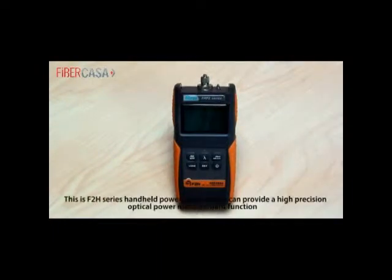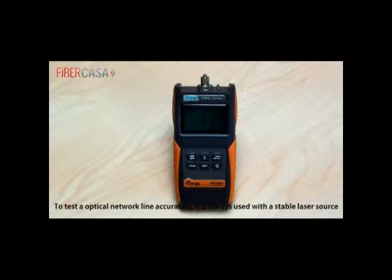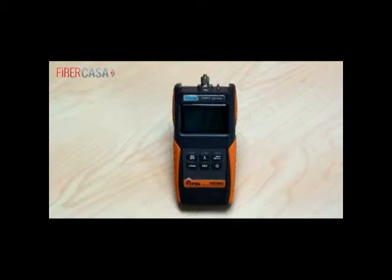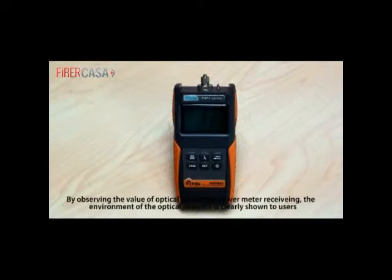This is F2H series handheld power meter, which can provide a high precision optical power measurement function. To test an optical network line accurately, it is always used with a stable laser source. By observing the value of optical power the power meter is receiving, the environment of the optical network is clearly shown to users.